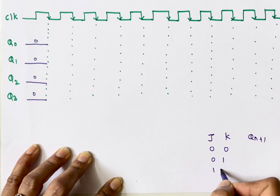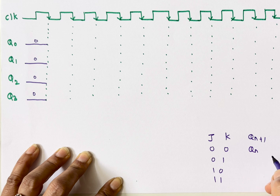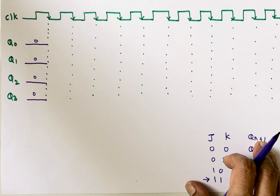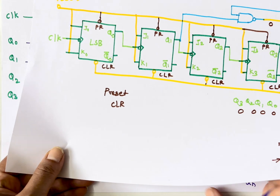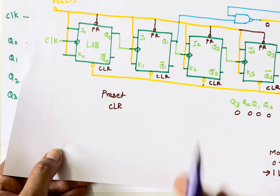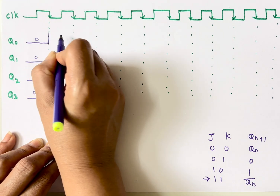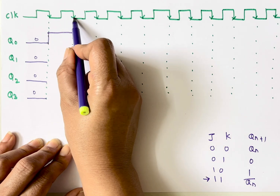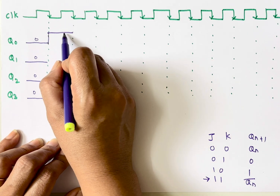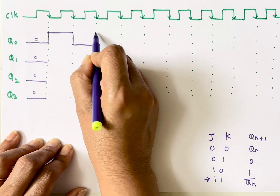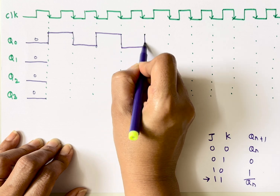Initially, assume all outputs are 0. For a JK flip-flop with both J and K connected to logic 1, the next state is the complement of the present state. Since the present output is 0, the next state will become 1 at the next clock edge. At the following clock edge, present output is 1, so next state becomes 0. The output keeps toggling.